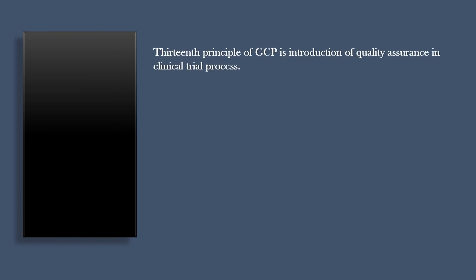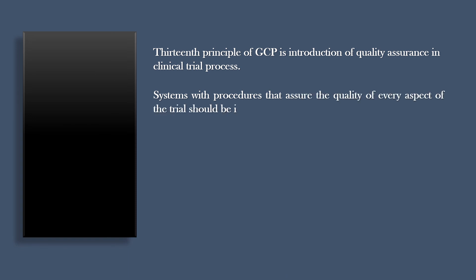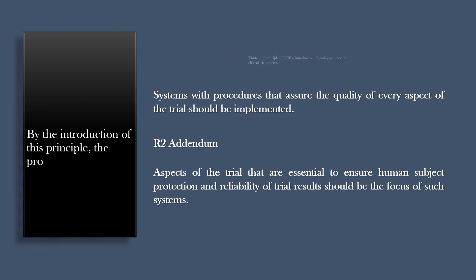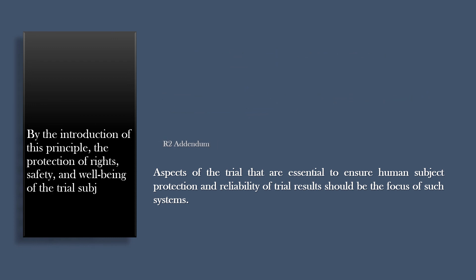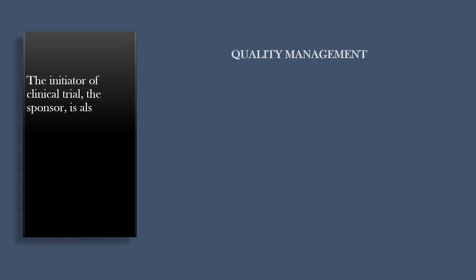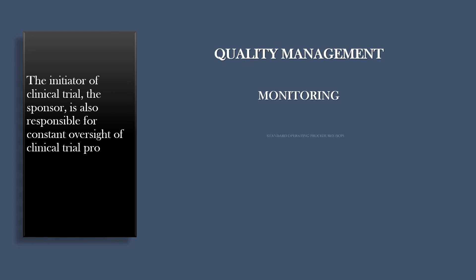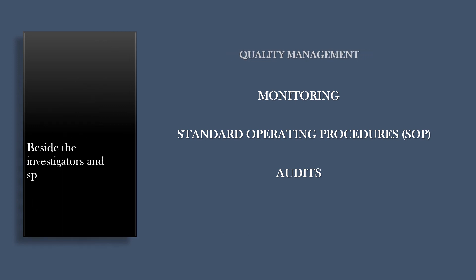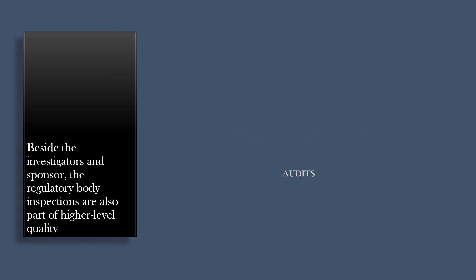The thirteenth principle of GCP is the introduction of Quality Assurance in the clinical trial process. Systems with procedures that assure the quality of every aspect of the trial should be implemented, with a focus on human subject protection and reliability of trial results. By introducing this principle, protection of the rights, safety, and well-being of trial subjects and quality of data do not rely on the investigator only. The sponsor is also responsible for constant oversight of the clinical trial process, by implementing quality management mechanisms such as monitoring, standard operating procedures, SOPs, and audits. Regulatory body inspections are also part of higher-level quality oversight.